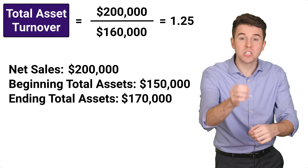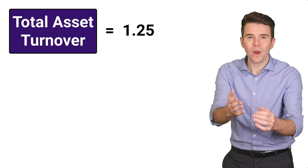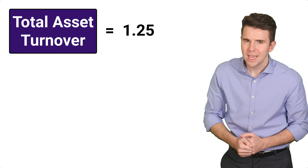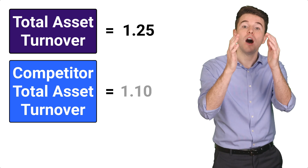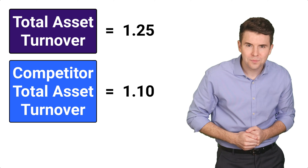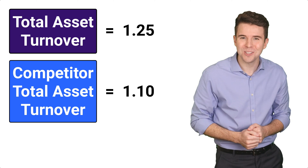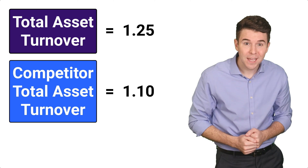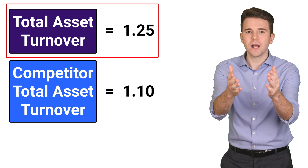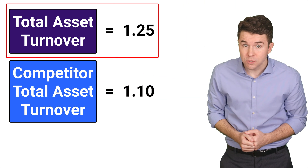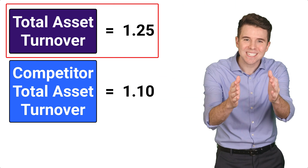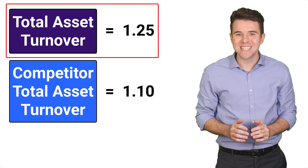It's also important to do competitor comparisons when evaluating total asset turnover. Suppose a competitor has a total asset turnover of 1.10. Which company is more efficiently using its assets? Based on total asset turnover, our company with a ratio of 1.25 is using its assets more efficiently to generate sales. In a nutshell, total asset turnover is a useful tool to assess how well a company is utilizing its assets to generate net sales.